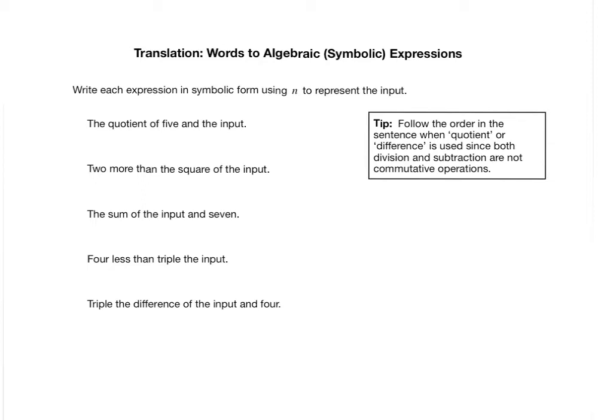Here's our first one. The quotient of 5 and the input. We're talking about the quotient, so the order matters. So we're going to do it in the order that we see it. 5 and the input. So 5 divided by the input N. And notice I wrote that as a fraction. We can think of a fraction as a division problem. So the quotient of 5 and the input is 5 over N, not N over 5, or not N divided by 5. It's specifically 5 divided by N, or 5 over N.